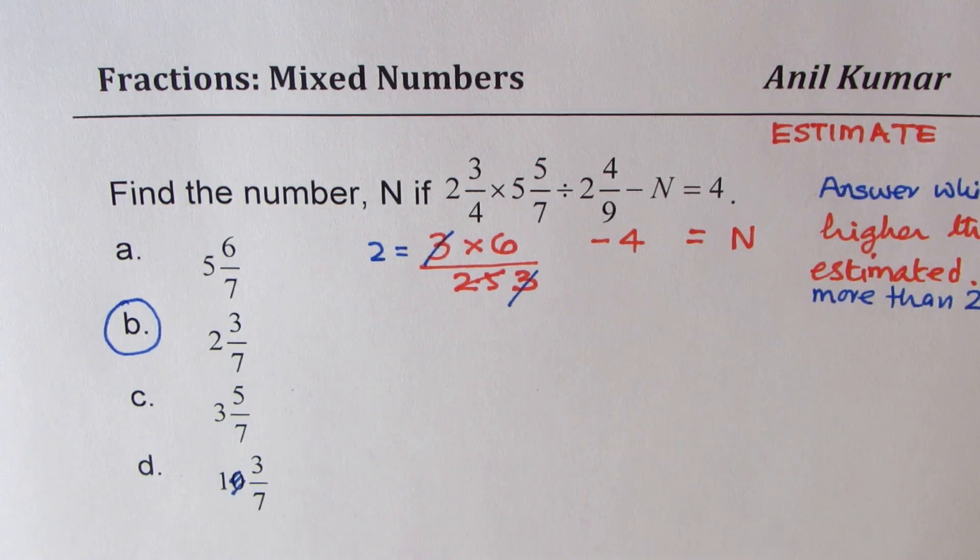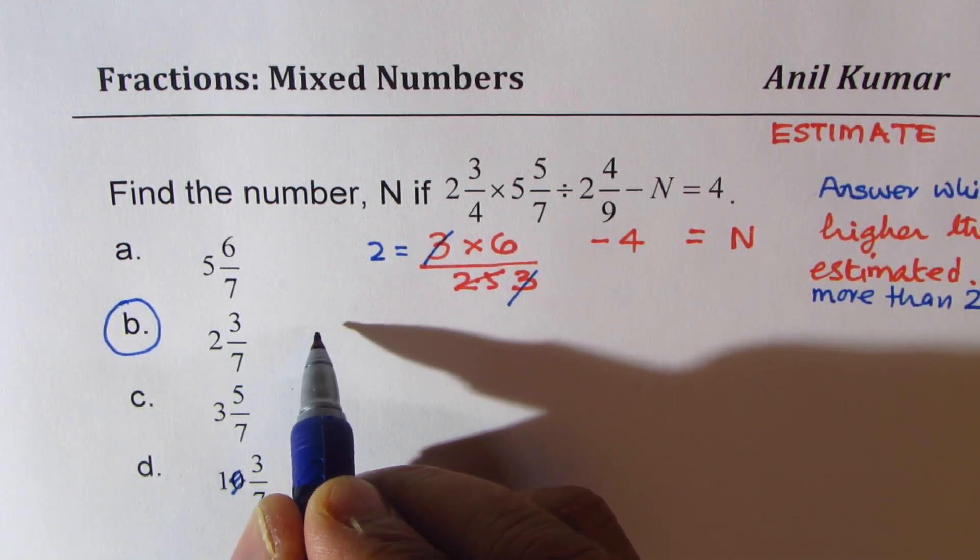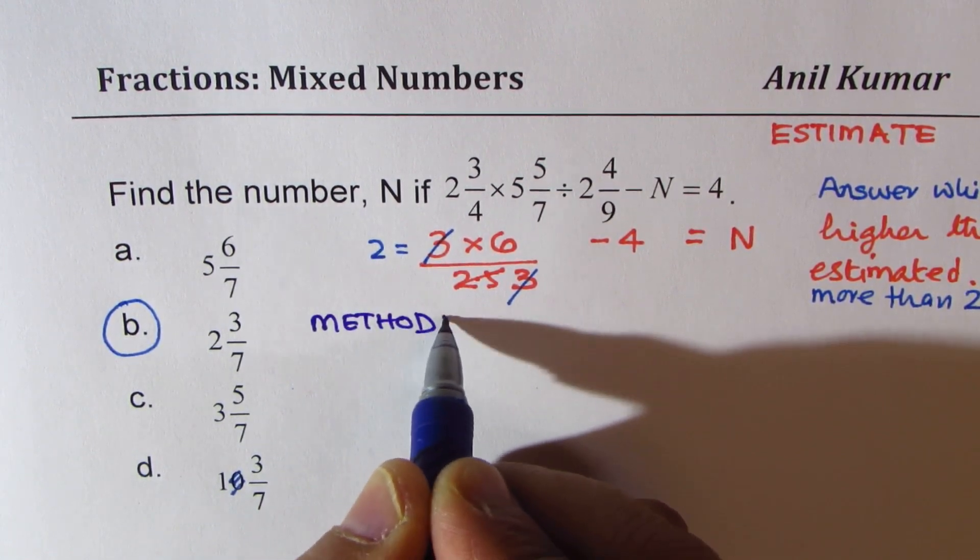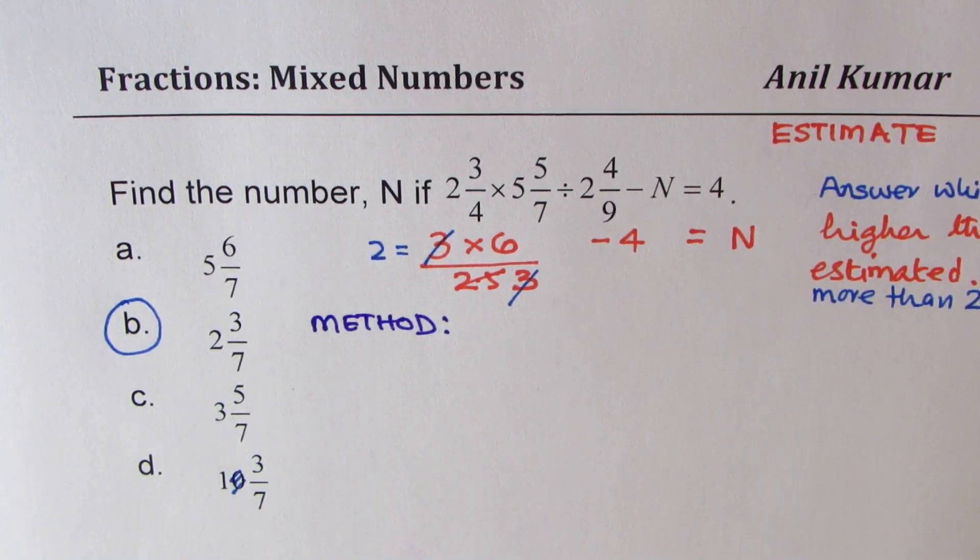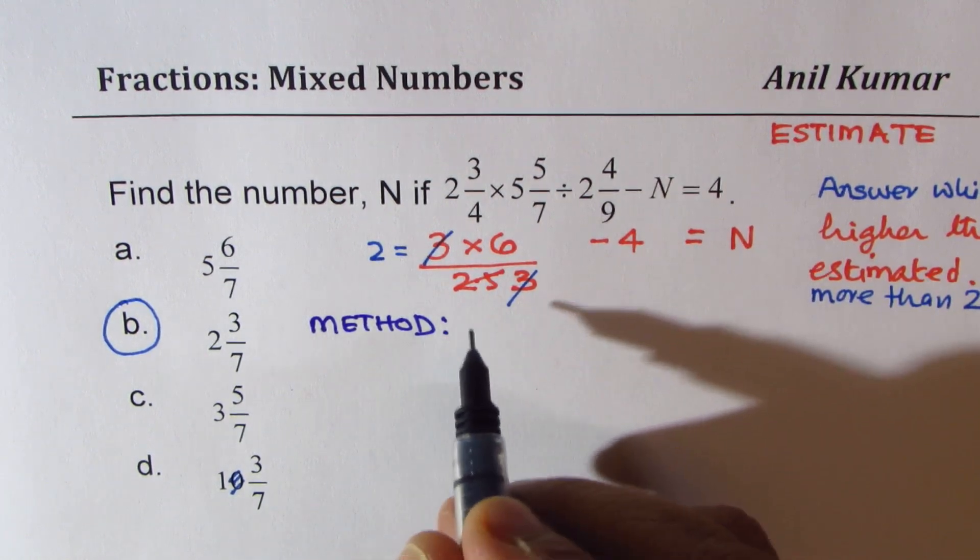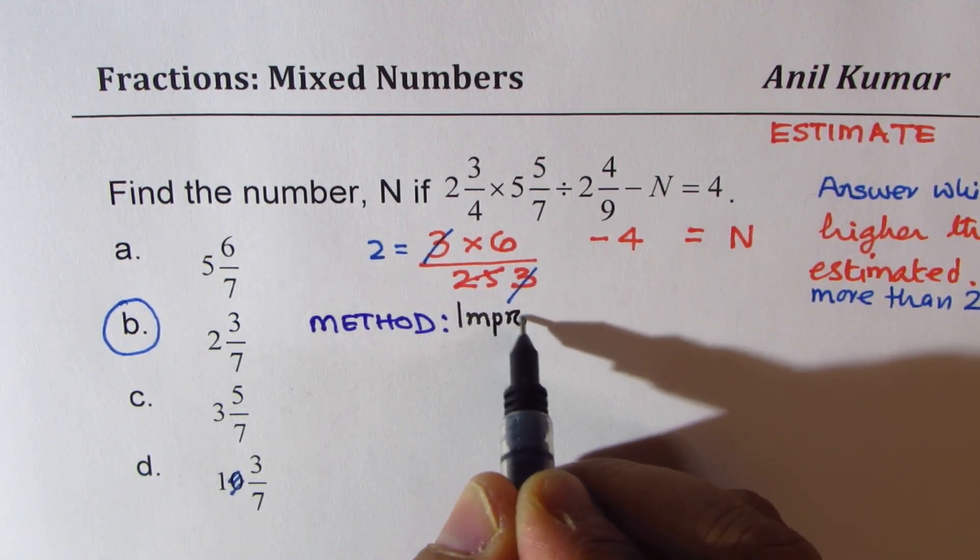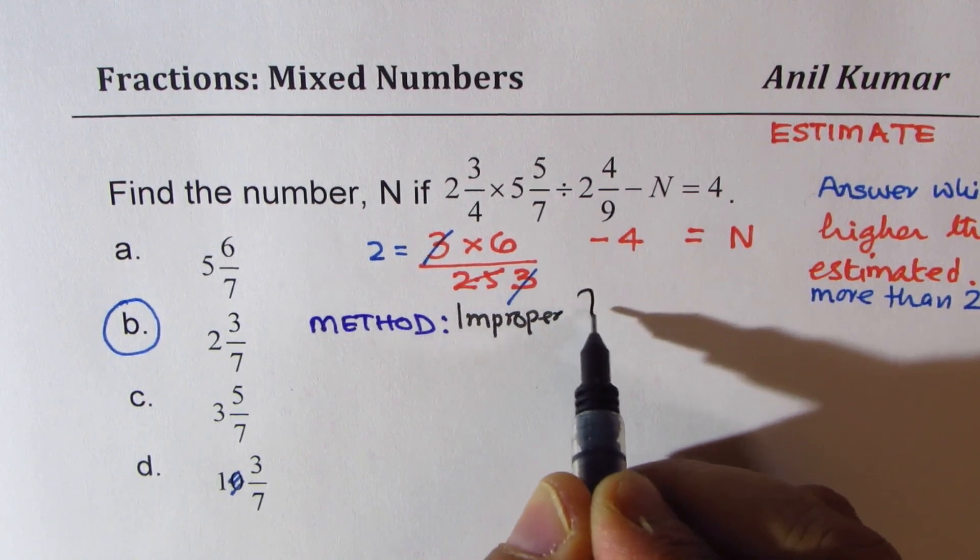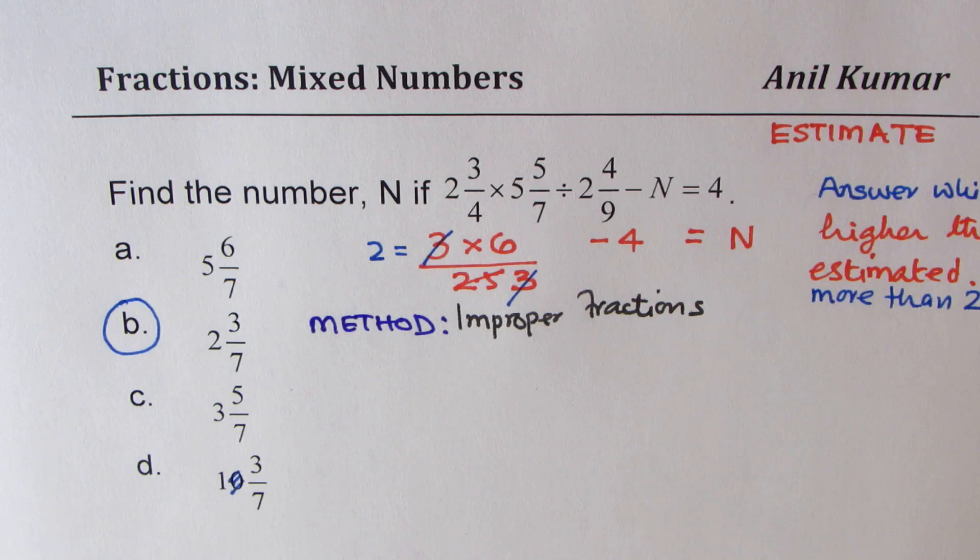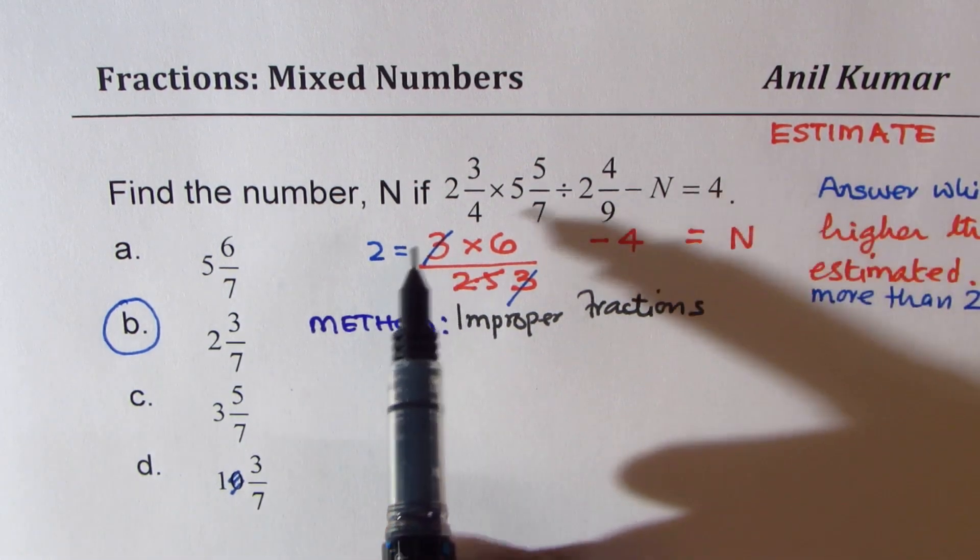And now, let us do the actual method, which may take time, but you need to understand. So, let us do process. Let us understand the method. First step is to write them as improper fractions. Now, some students at this time do not even understand how to do it fast. Well, simple.